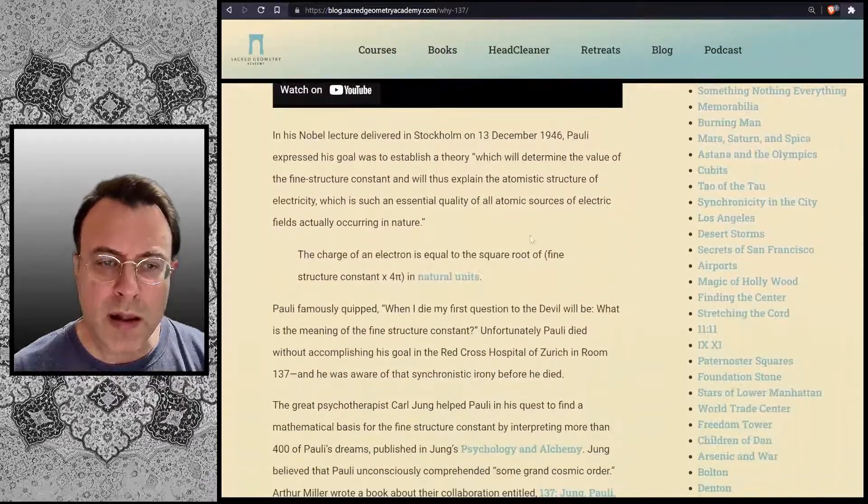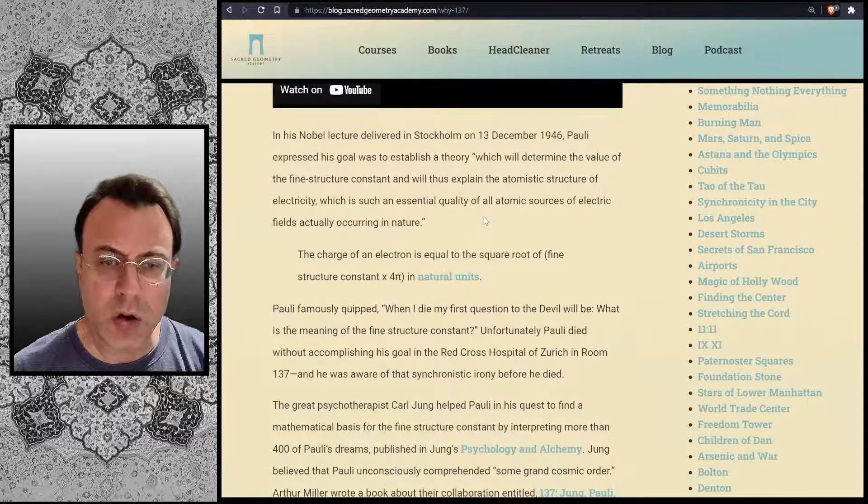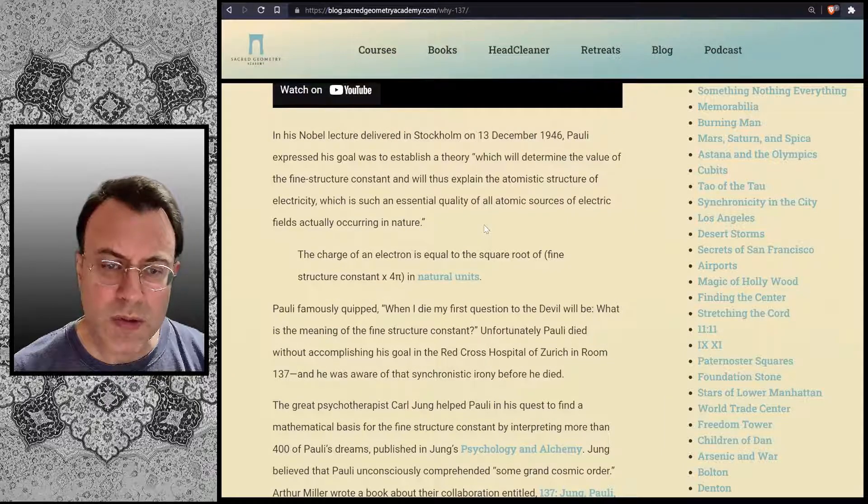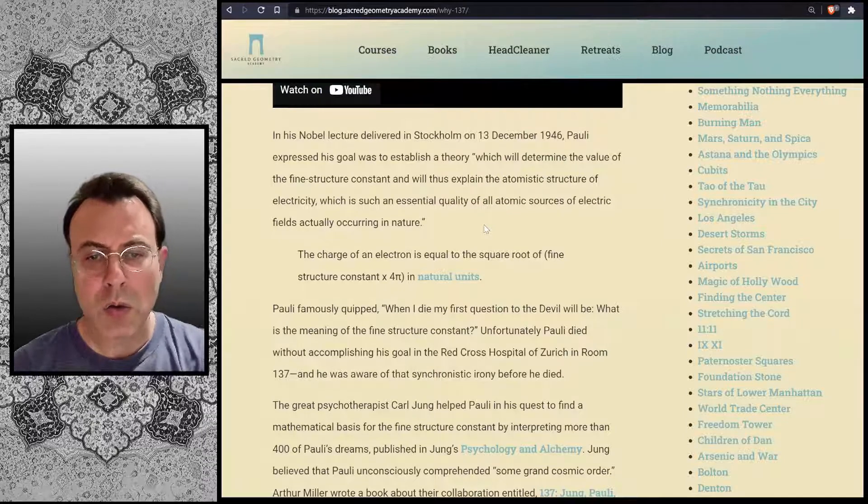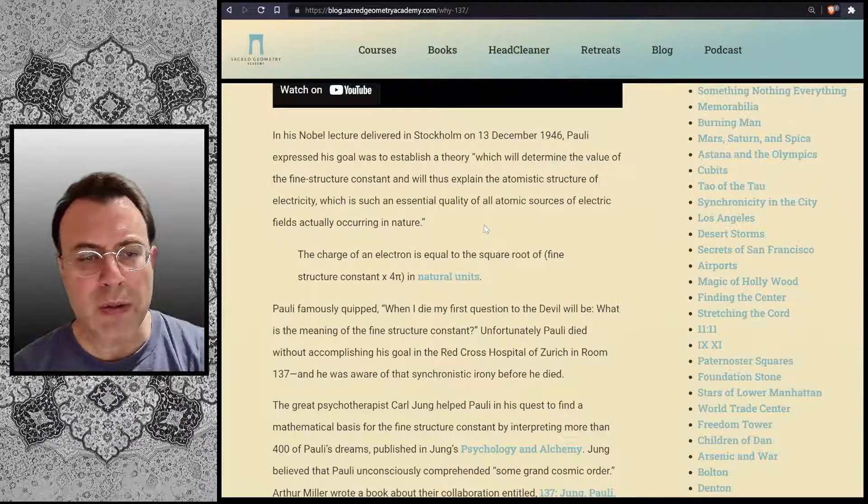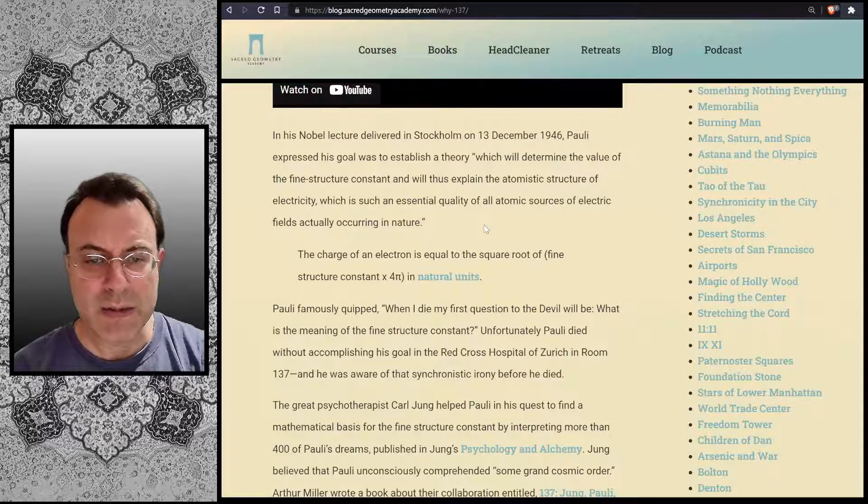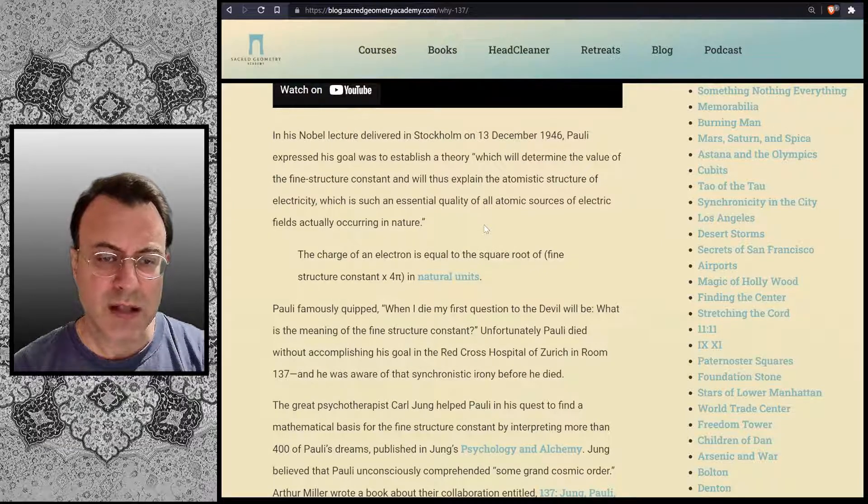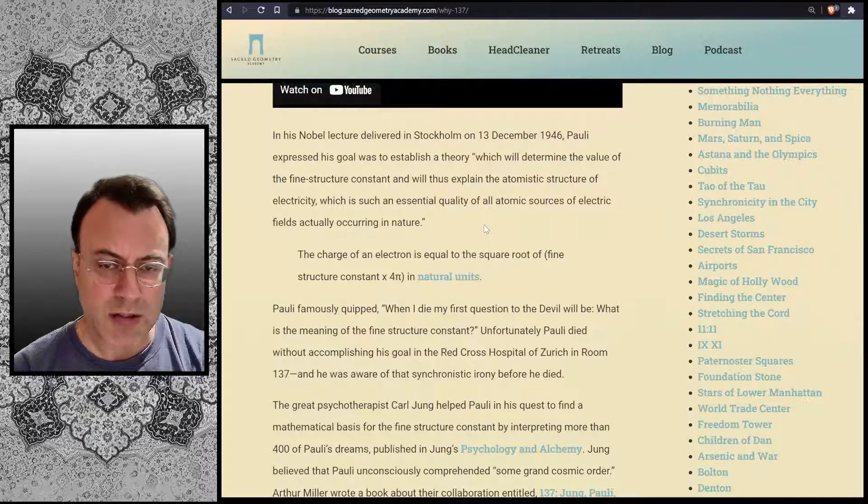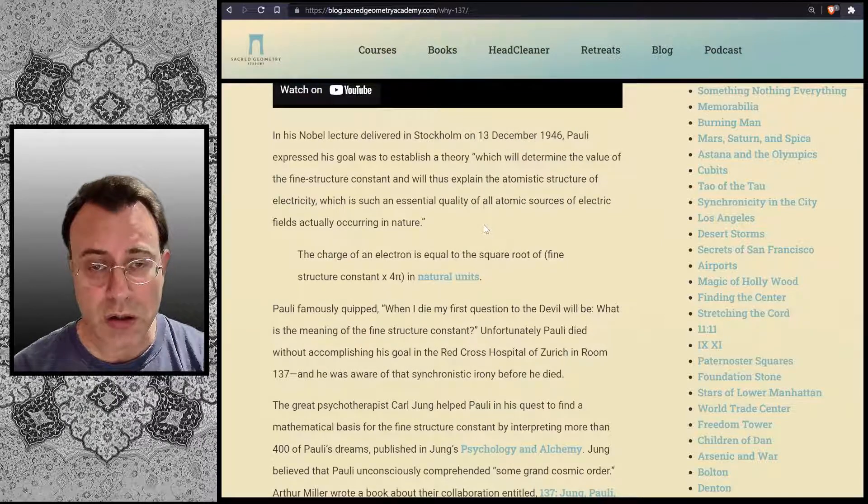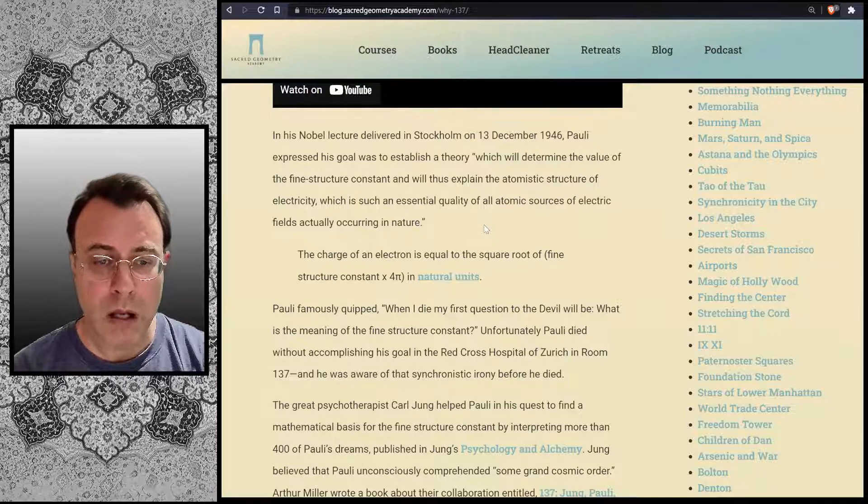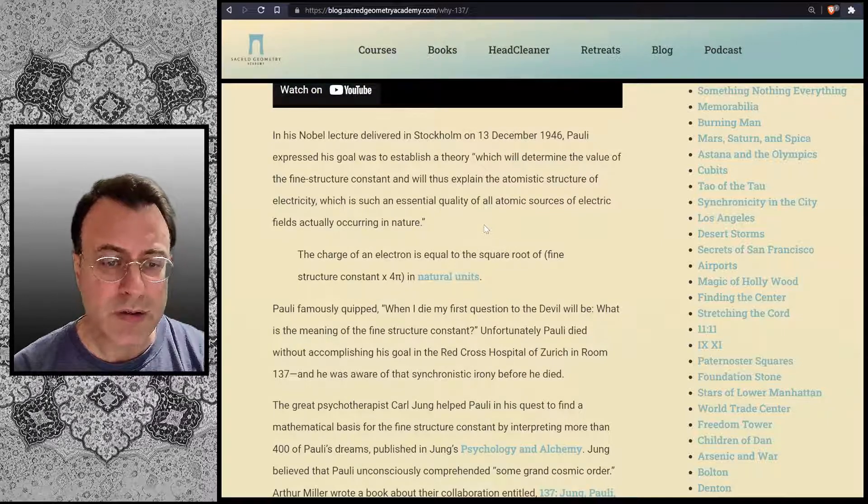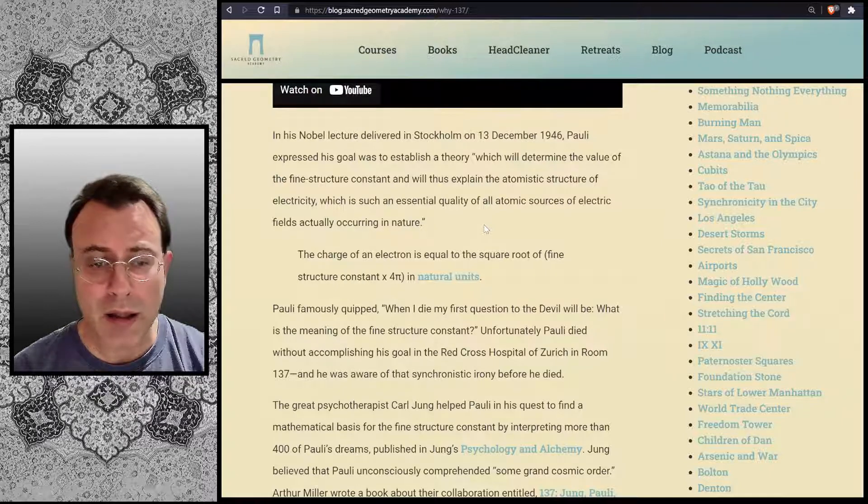In his Nobel lecture delivered in Stockholm on the 13th of December 1946, Pauli expressed his goal was to establish a theory which will determine the value of the fine structure constant and will thus explain the atomistic structure of electricity, which is such an essential quality of all atomic sources of electric fields actually occurring in nature.